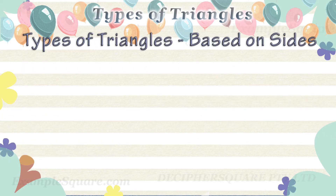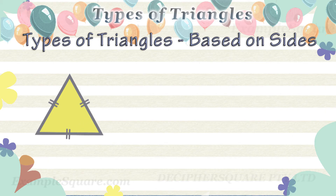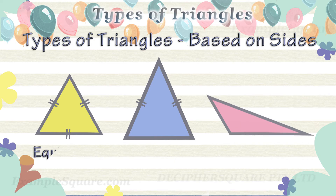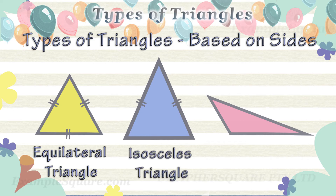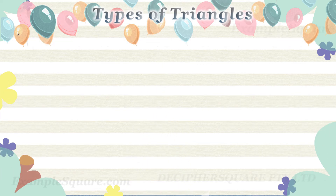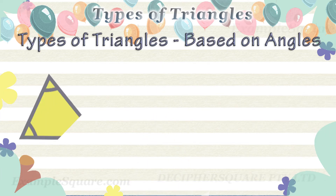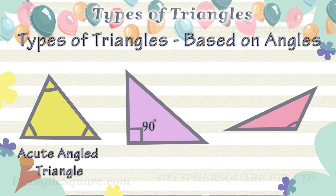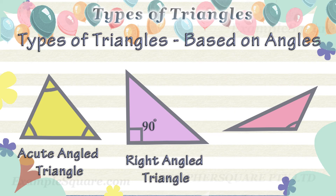So there are three types of triangles based on the sides of the triangle: equilateral triangle, isosceles triangle, and scalene triangle. And there are three types of triangles based on the interior angles: acute angled triangle, right angled triangle, and obtuse angled triangle.